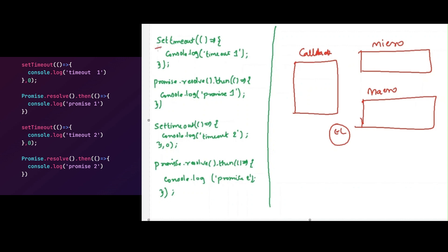Whenever the JavaScript engine sees a setTimeout, it will push it into the macro-task queue. Remember, setTimeout will be pushed into the macro-task queue. A Promise will be pushed into the micro-task queue. So setTimeout 1 and setTimeout 2 go to the macro-task queue, and promise 1 and promise 2 go to the micro-task queue.